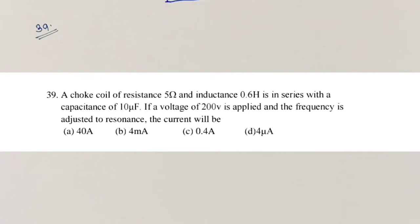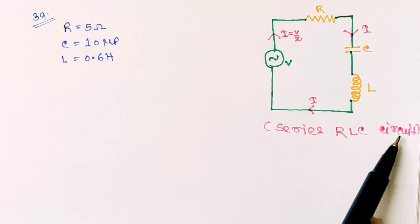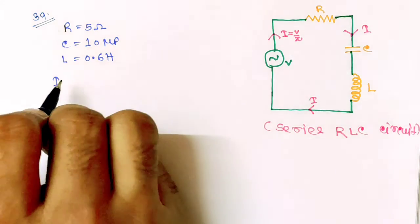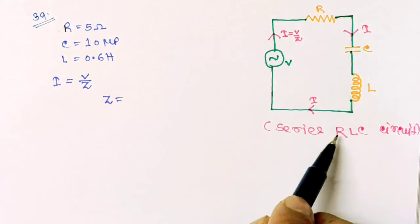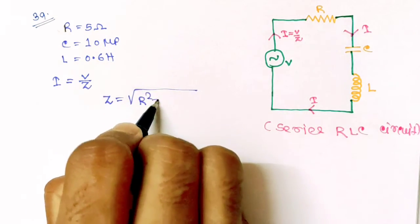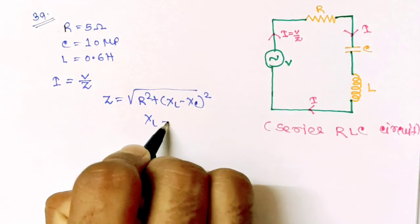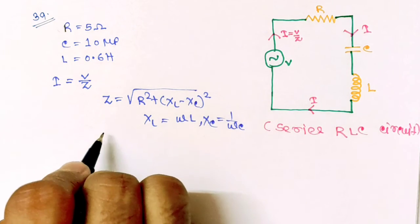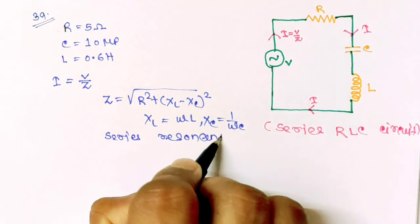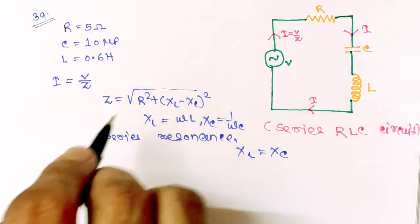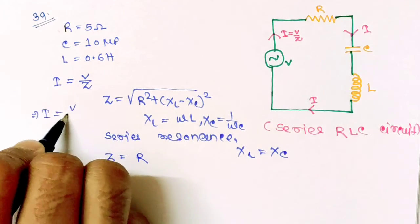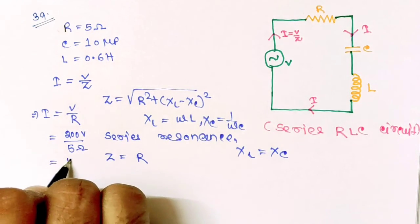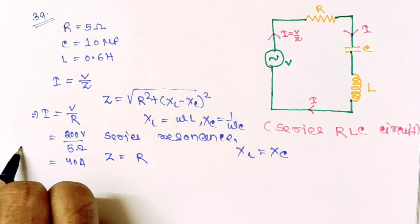Question number 39: A series RLC circuit is given with values of R, C, and L. We have to find the current flowing in the circuit. The current I = V/Z, where Z is the impedance given by the square root of R² + (X_L − X_C)². With X_L = ωL and X_C = 1/(ωC). At resonance, X_L = X_C, so impedance Z = R. Thus I = V/R = 200/5 = 40 ampere. The correct option is option A.